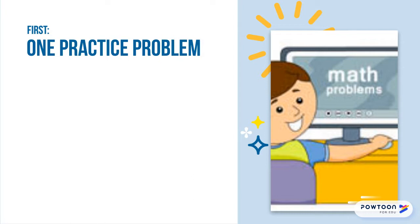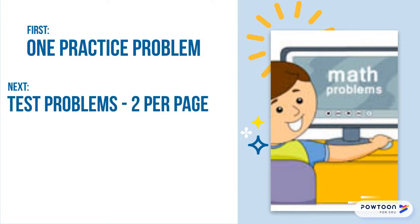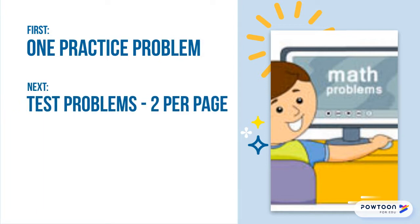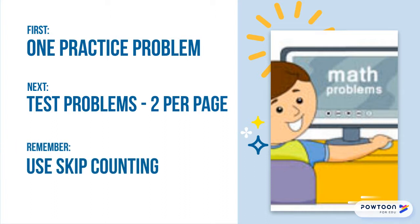The next thing you need to know is that when the test starts you'll be given two problems per page. Each problem will have the number sentence at the top and underneath will be three answers that you need to choose from. Lastly, skip counting will be very helpful in this test. Most of the problems here can be solved by skip counting forward or backward from any number. You know how to do that!